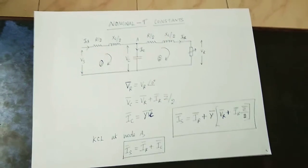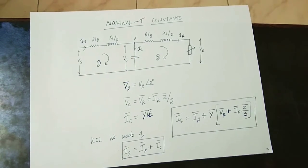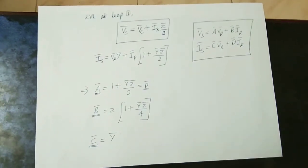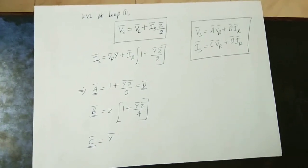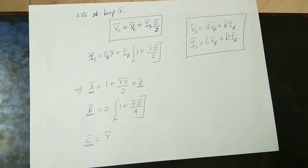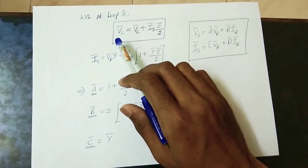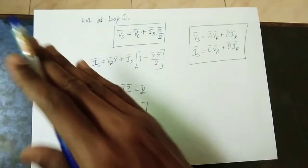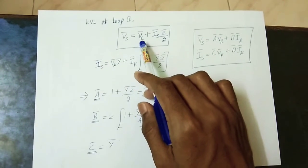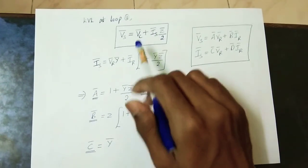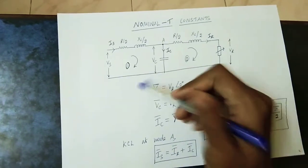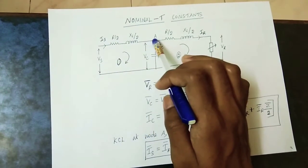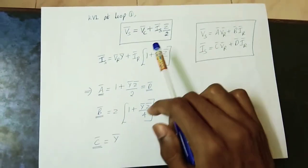Z by 2. If you want to find the equation, consider the loop on the sending side — loop 1. In loop 1, you account for the impedance and the capacitance. For the voltage drop, Vs is the source voltage. The impedance drop gives us Vs equal to Vc plus Is into Z by 2.